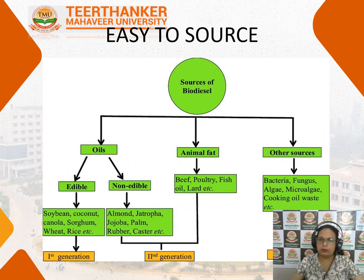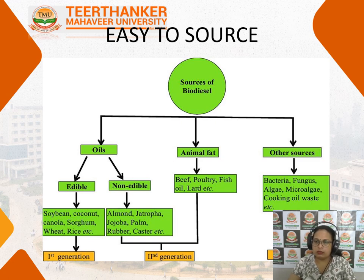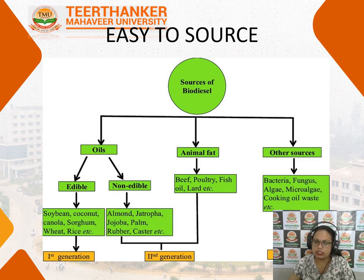Biodiesel can be obtained from oils, animal fat, and other sources. Edible oils include soybean, coconut, canola, sunflower, wheat, and rice. Non-edible oils include jatropha oil, jojoba oil, palm oil, rubber oil, and castor oil. Animal fats from slaughterhouses — beef, poultry, fish oil, and lard — can also be used. Microalgae, bacteria, fungus, and used cooking oil can also be used for biodiesel production. Edible oils are categorized as first-generation biofuel, non-edible and animal fats as second-generation fuel, and algae-based sources as third-generation fuel.